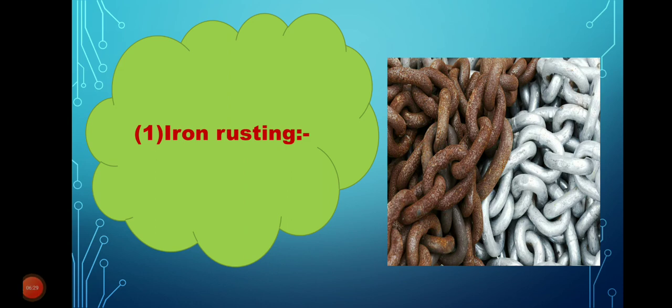When iron is exposed to water or oxygen, its color changes from its original color to brown. This is called iron rusting. Can the iron return back again to its original shape, to the gray color? No, because its component inside has changed. So, iron rusting is a chemical change.